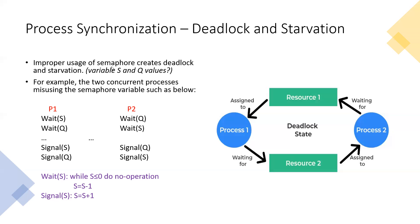When we use the semaphore variable improperly, it creates a deadlock situation. Let's take an example. There are two different processes — one is P1 and the other is P2.